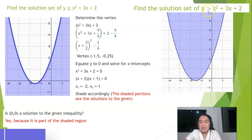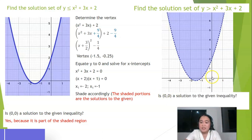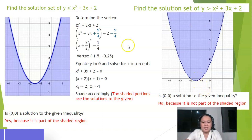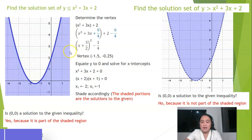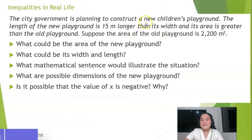Now consider the same quadratic but with y is greater than x squared plus 3x plus 2. The vertex and x-intercepts are the same — negative 1.5, negative 0.25 and x equals negative one, negative two — still opening upward. This time, since the inequality is greater than, shade inside the parabola. Since it is open (no equality), use a broken line. Is zero, zero a solution? No, zero, zero is not in the shaded region.